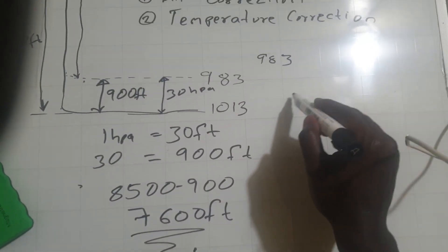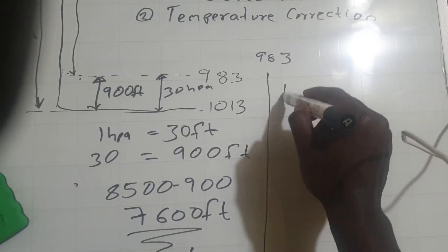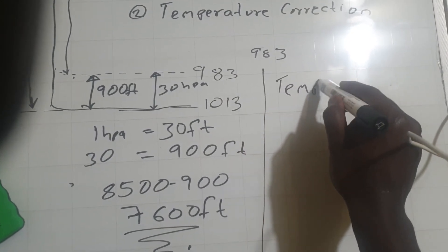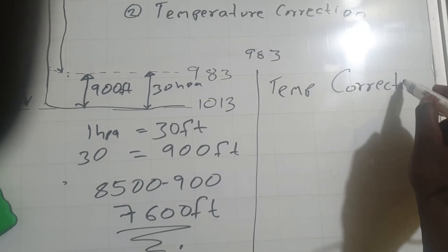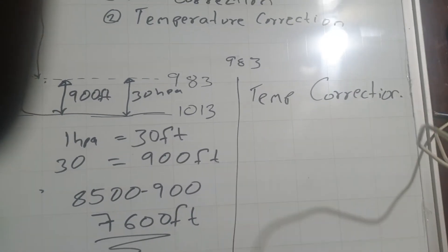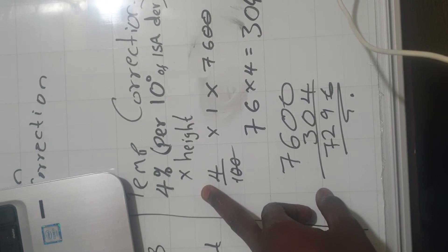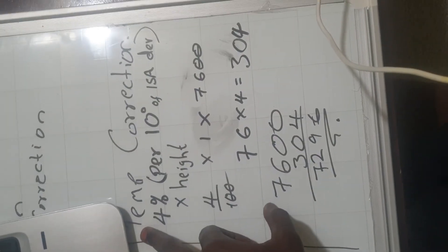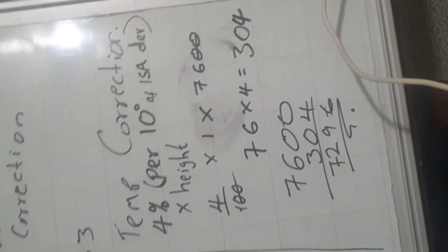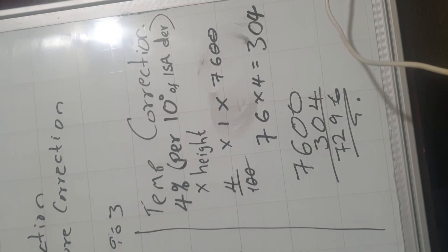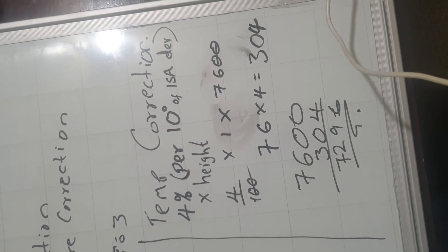So for the temperature correction, you have already done the altitude correction, so the second part is the temperature correction. So how do you go about the temperature correction?